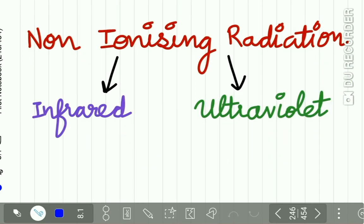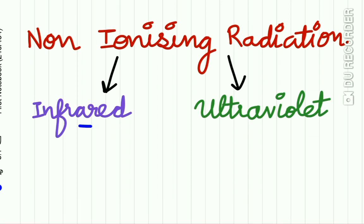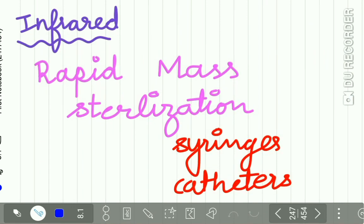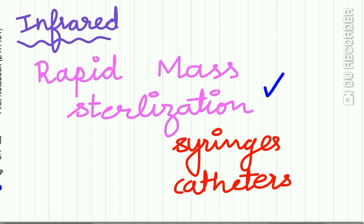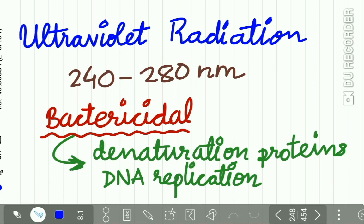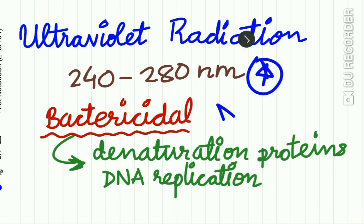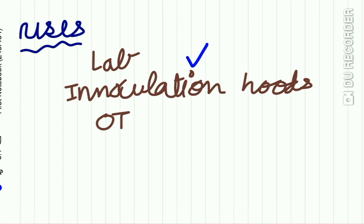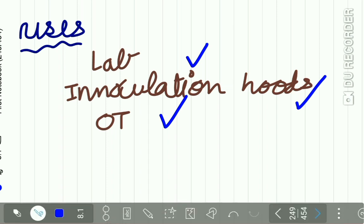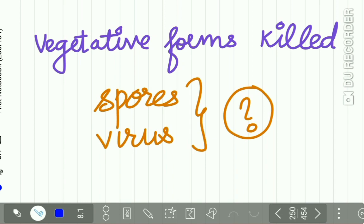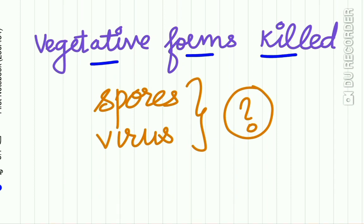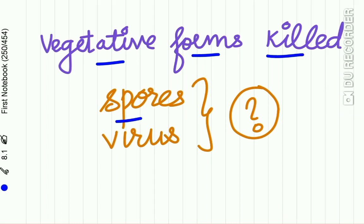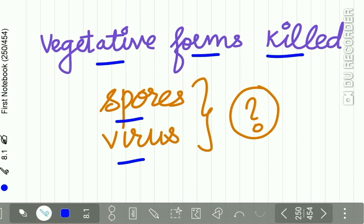Non-ionizing radiations include infrared and ultraviolet radiations. Infrared radiation is used for rapid mass sterilization of syringes and catheters. Ultraviolet radiation with a wavelength of 240 to 280 nm has a marked bactericidal effect, causing denaturation of bacterial proteins and preventing bacterial DNA replication. Uses of UV radiation include sterilization of labs, inoculation hoods, and operation theatres. However, while vegetative forms are definitely killed, spores are highly resistant and the susceptibility of viruses is variable, so complete sterilization cannot be assured by non-ionizing radiation.